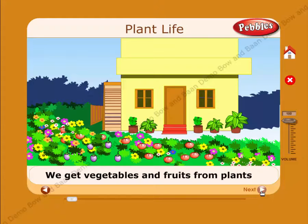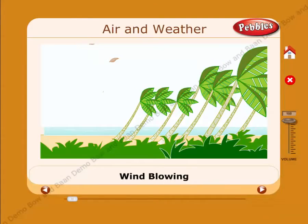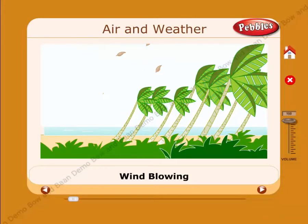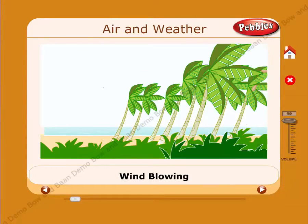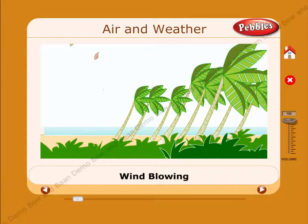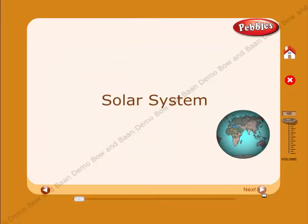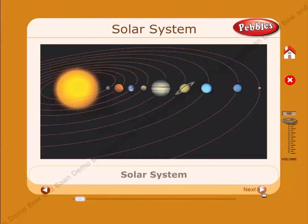Children, we all eat vegetables and fruits. Do you know where we get them? We get them from plants. Air is found everywhere around us, but can we see air? No, we can only feel it.